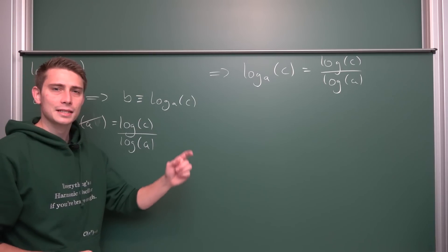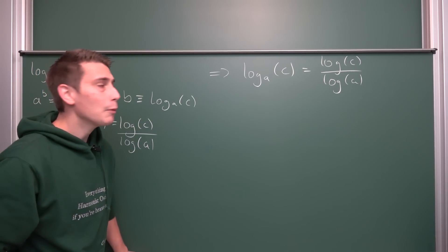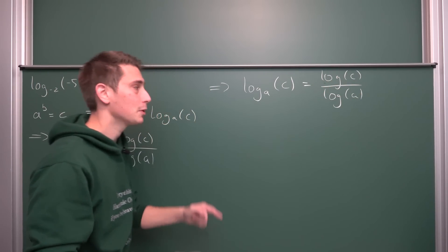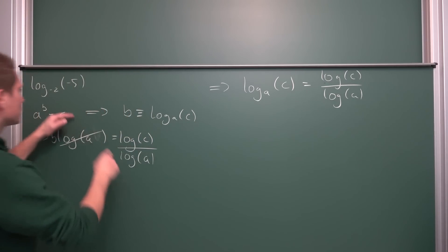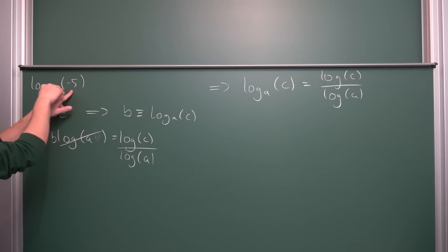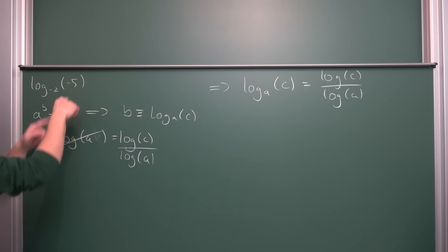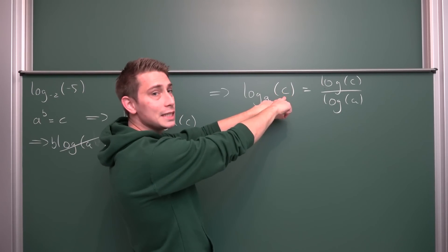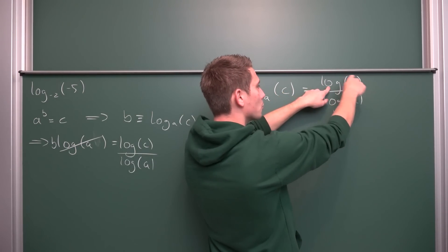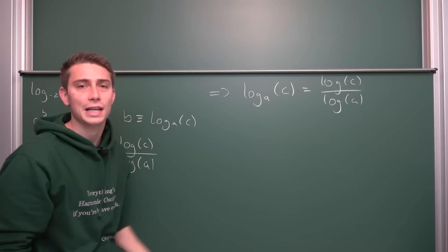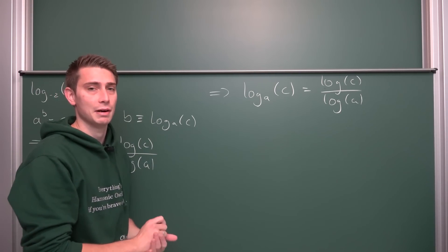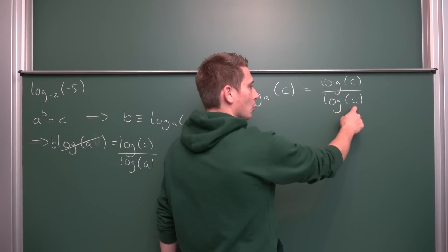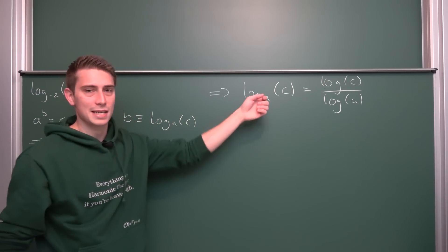Those were some prerequisites. Now we are going to see how we can define the logarithm of a negative argument, because we could have the situation where we have the log of base a of some negative argument — meaning we need to compute the natural log of a negative number, like negative 5. In the process we are also going to find out what the logarithm of a negative base actually is, because it's already in the formula.